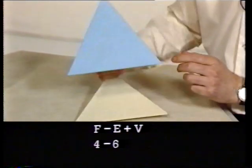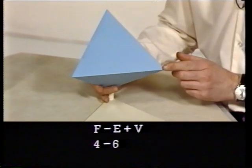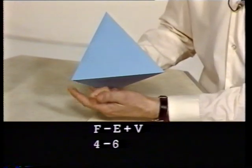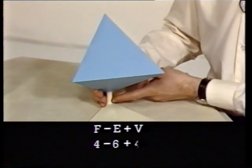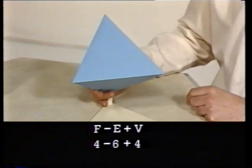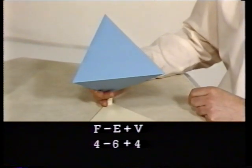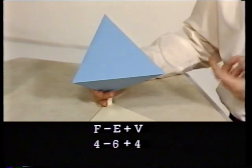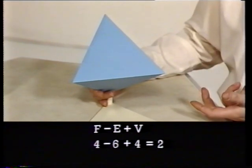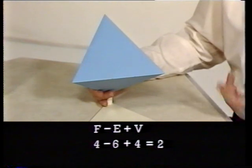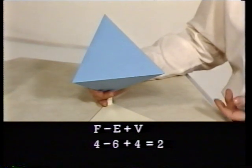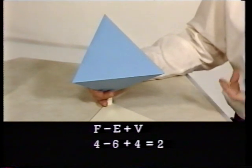There are four triangular faces, six edges — three at the bottom and three at the top — and four vertices. The total equals two. So the number two is the Euler characteristic of the tetrahedron: faces minus edges plus vertices.